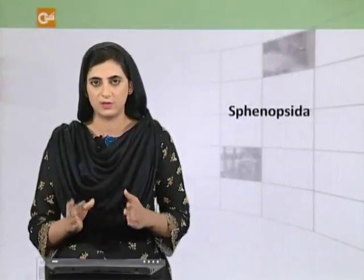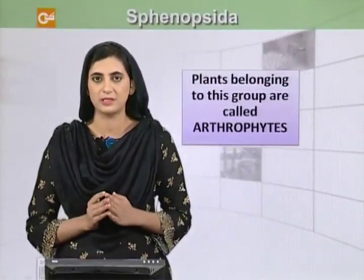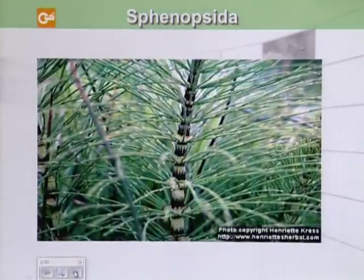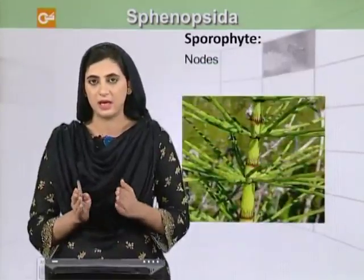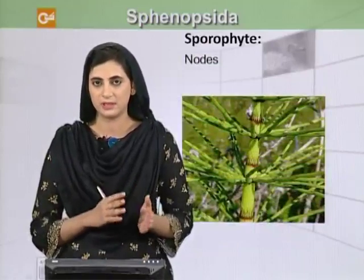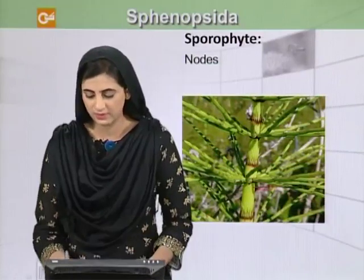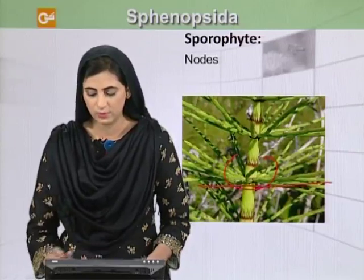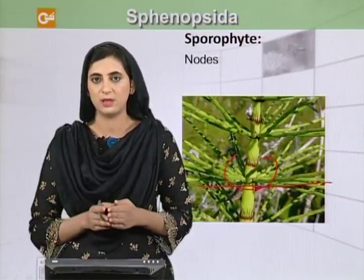The third subdivision of division Tracheophyta is Sphenopsida. The plants belonging to Sphenopsida are also called arthrophytes because they have joints in their body, like the joints you can see in the figure. They have roots, leaves, and stem, and the stem bears nodes where whorls of leaves originate. The leaf may be scale-like, as shown in the figure, or they can be expanded.